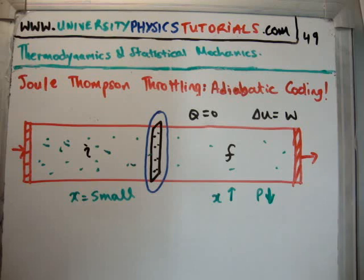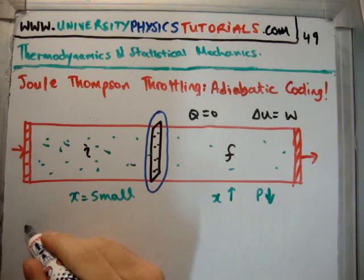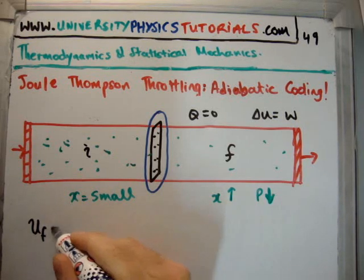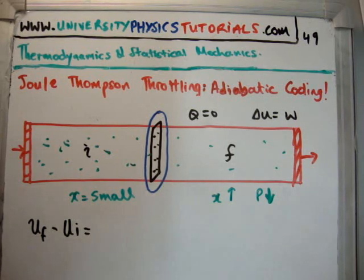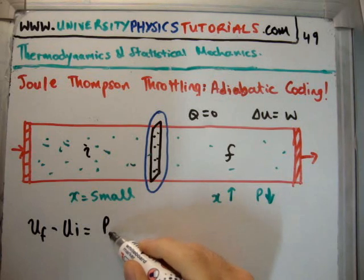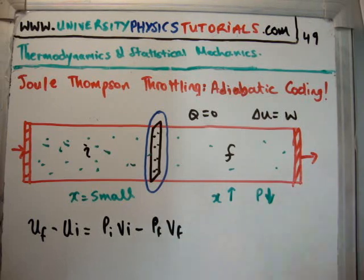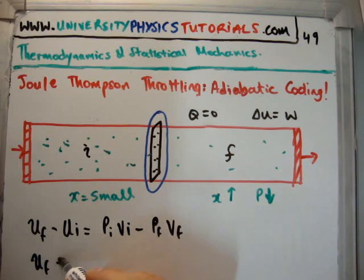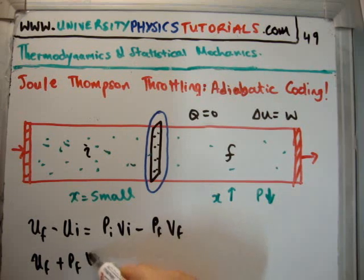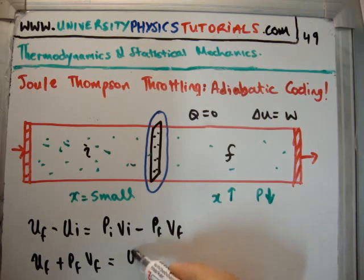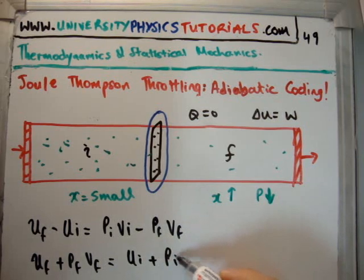So going back to the internal energy, that means what we have is the internal energy of the final state minus the internal energy of the initial state is equal to the compression work. I've done a video on compression work in the past, you can look up my videos if you like and you'll find that it's just going to simply be P pressure initial, volume initial minus pressure final, volume final. So let's arrange for the final and the initial variables and we're going to get Pf Vf plus Uf is equal to Ui plus Pi Vi.